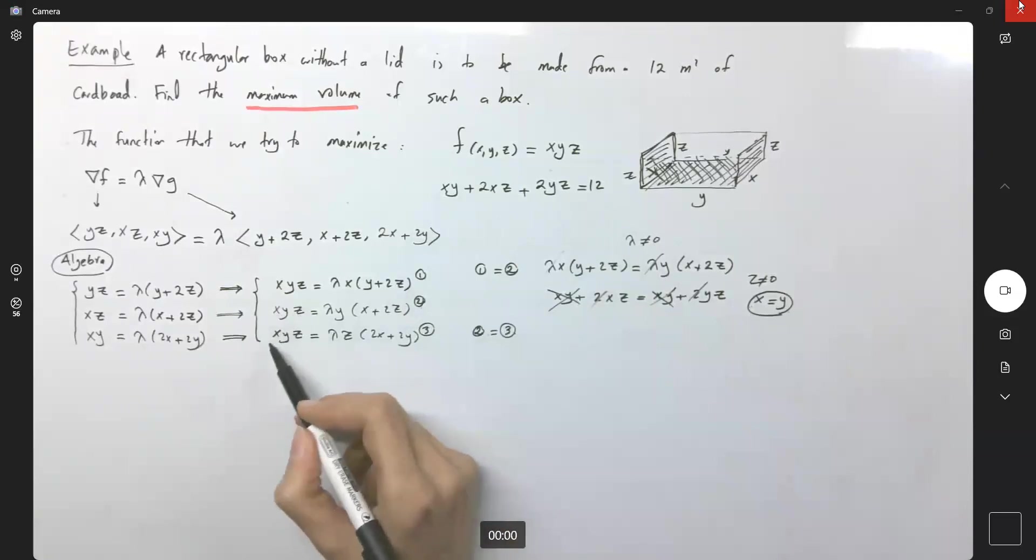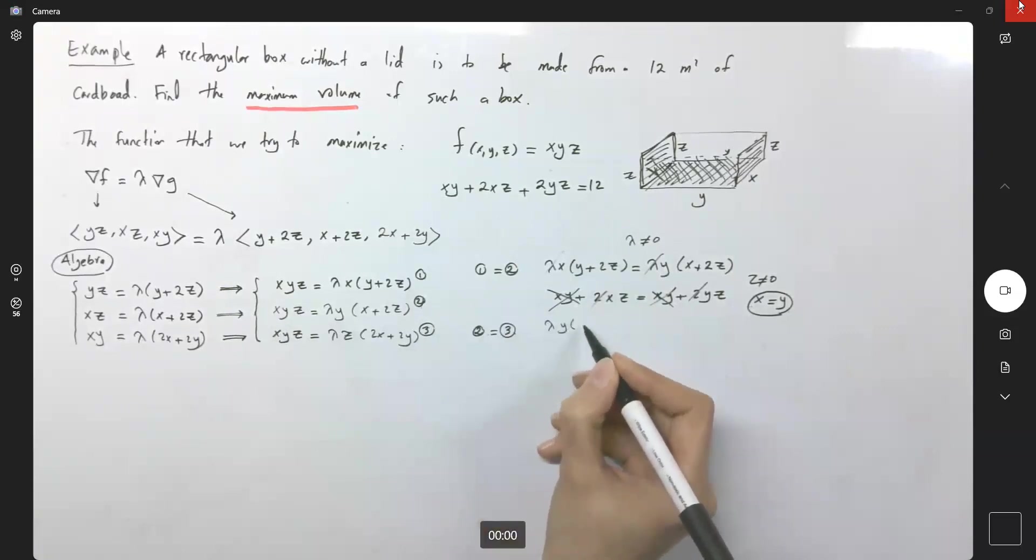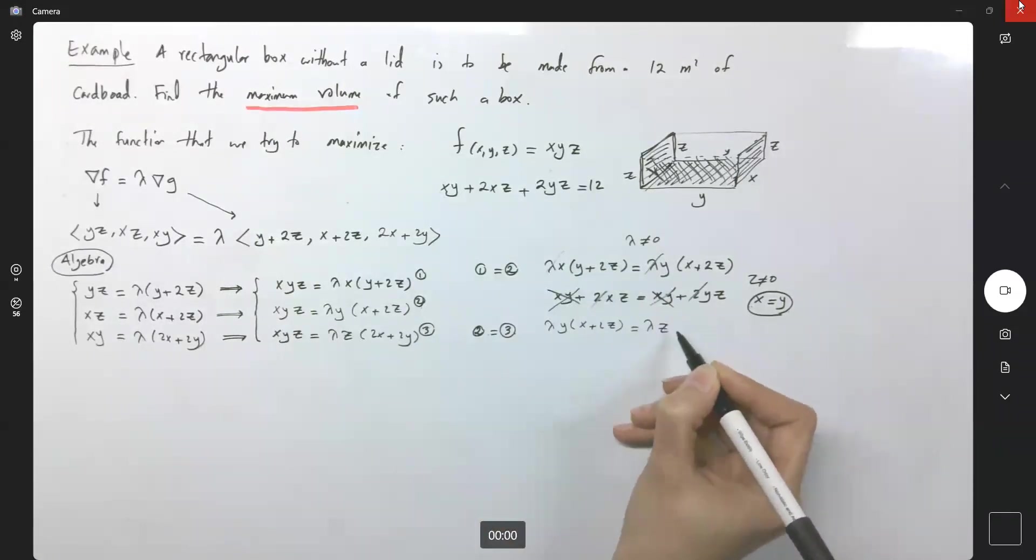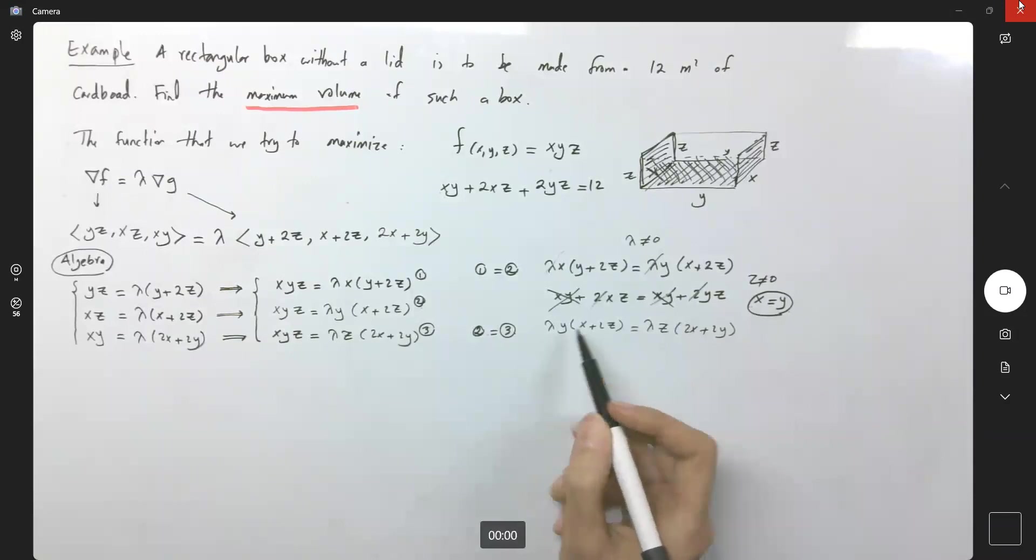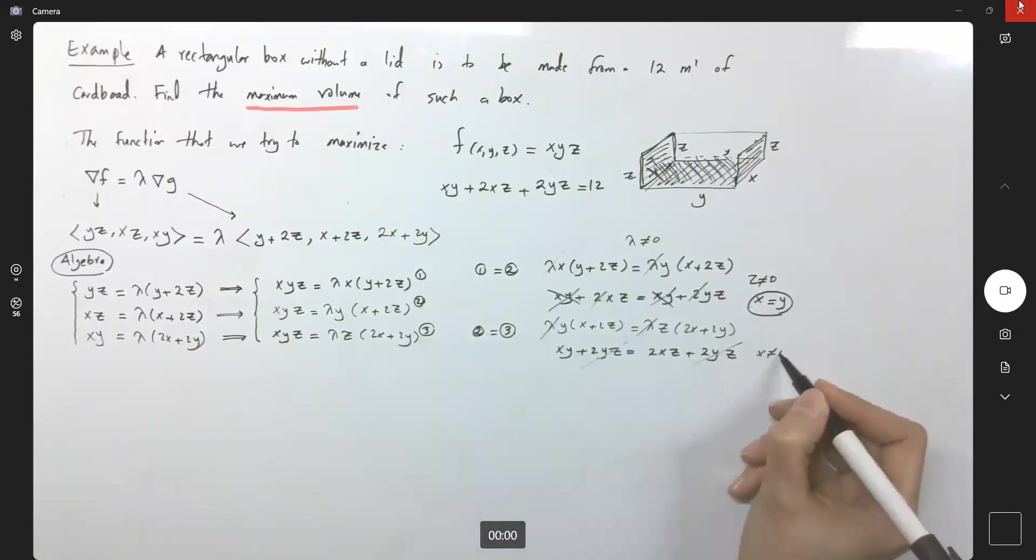It says, hey, x, y, z is equal to x, y, z, so the right hand side must be equal to each other. What do we have? We have lambda y, x plus two z, equals to lambda z, two x plus two y. So if again lambda is not equal to zero, we can cancel out lambda and lambda or divide by lambda. So here we have x, y plus two y, z equals to two x, z plus two y, z. So here I can get rid of two y, z, two y, z. Again, note that y and z cannot be equal to zero. Here x, y is equal to two x, z. If x is not zero, y becomes two z.